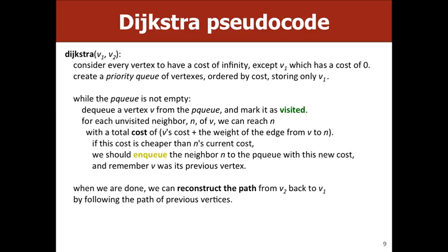For example, if I'm at node B and it took seven to get there, and there's an edge of length two to C, the total cost to C is at most nine. If this new cost is less than the current recorded cost for that node, we enqueue the neighbor with the lower cost. If it's greater, we ignore it — maybe we can already reach C with cost eight instead of nine. We also need to remember which vertices we traversed to reconstruct the path.